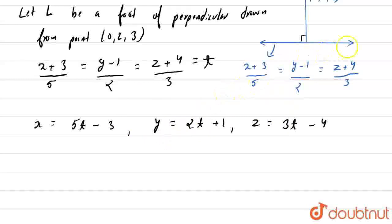Basically these are the points of our foot of perpendicular which is L. So now we got arbitrary points for our foot of perpendicular.